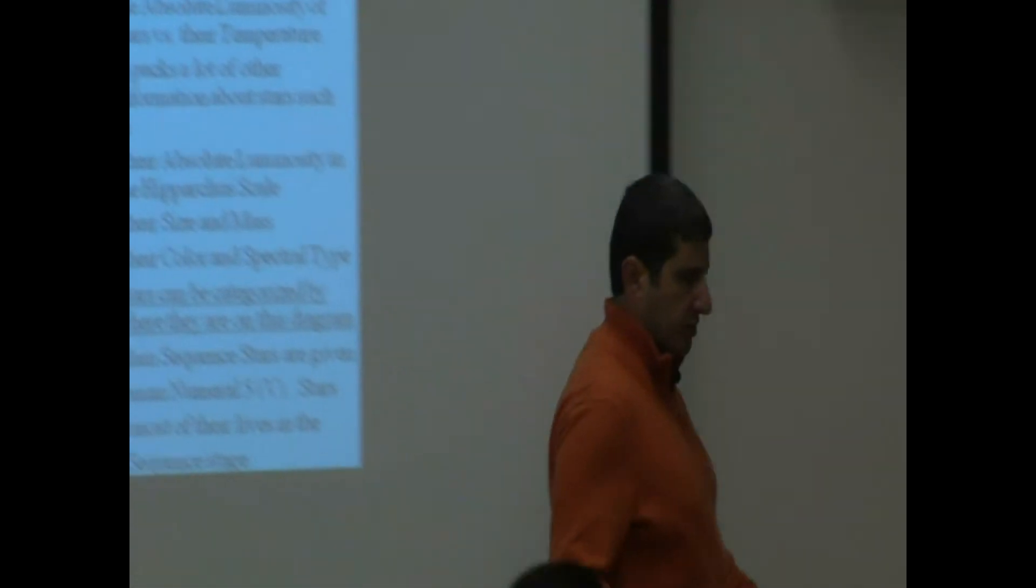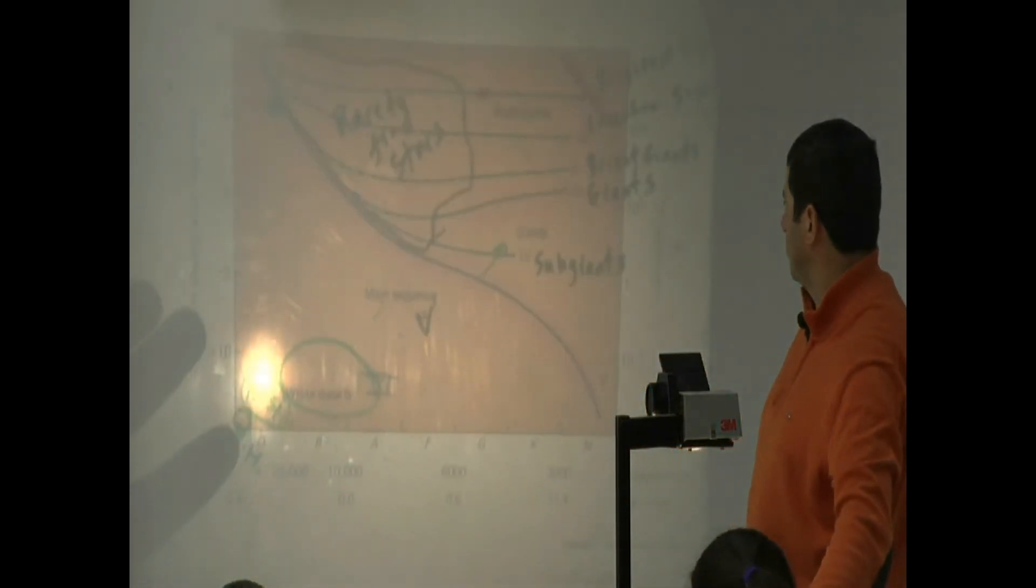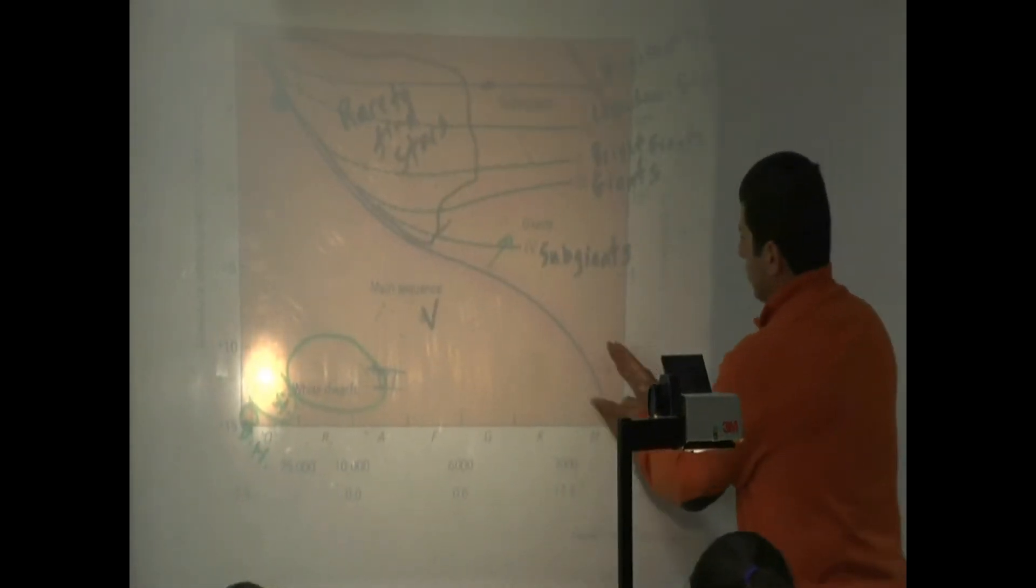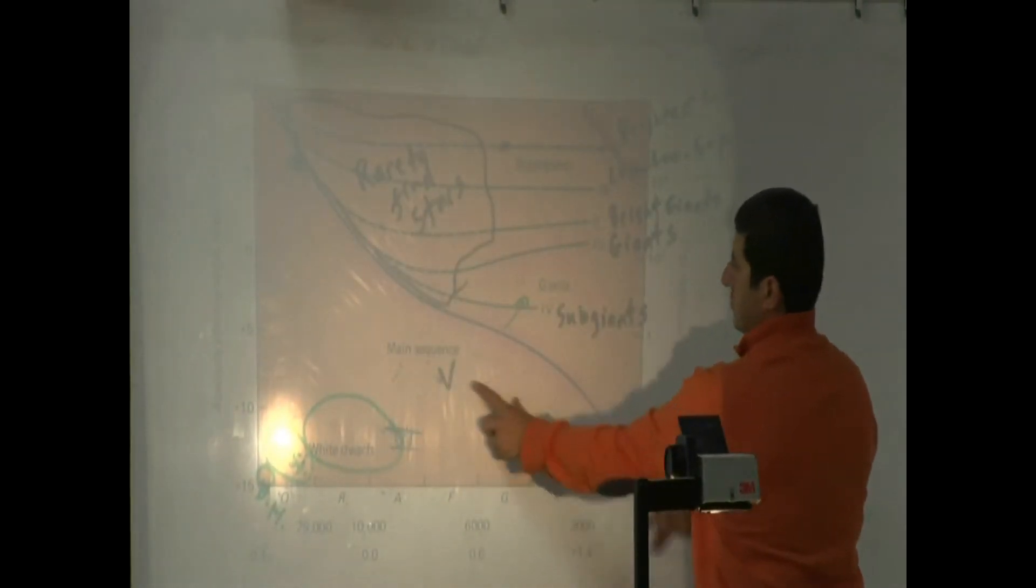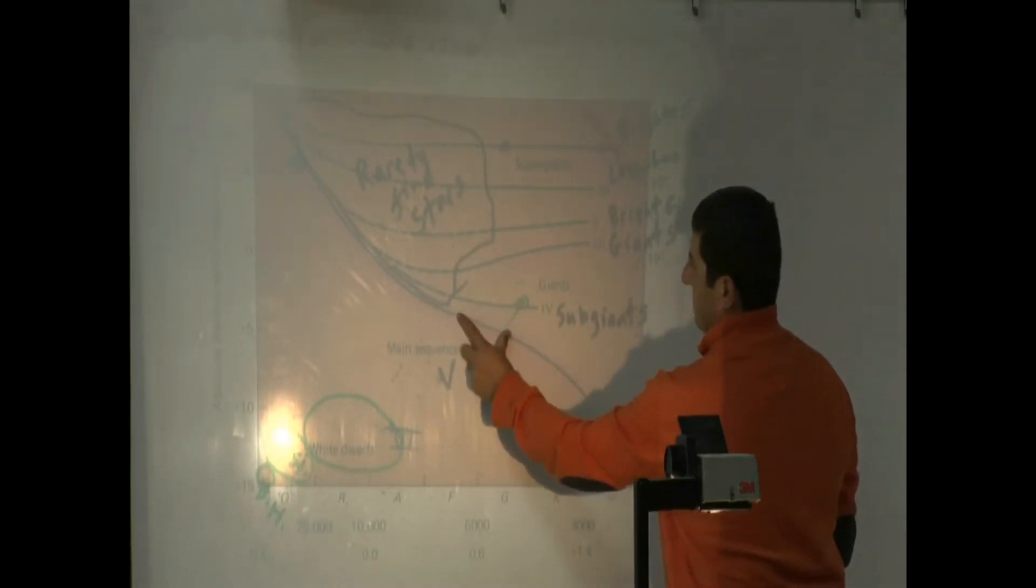This diagram shows the regions really well. You see, this is the main sequence, Roman numeral V. When the star starts dying, it moves off the main sequence.